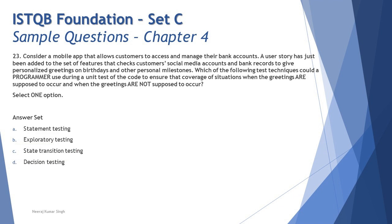Let's jump into question number 23. Consider a mobile app that allows customers to access and manage their bank accounts. A user story has just been added that checks customers' social media accounts and bank records to give personalized greetings on their birthdays and other personal milestones. Which test technique could a programmer use during a unit test to ensure coverage of situations when greetings are supposed to occur and when they are not supposed to occur?